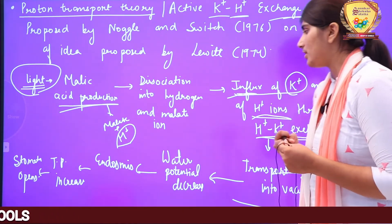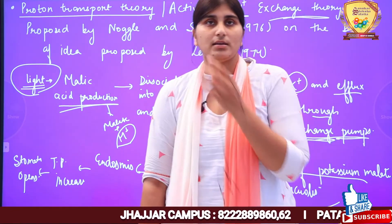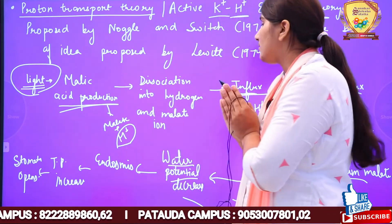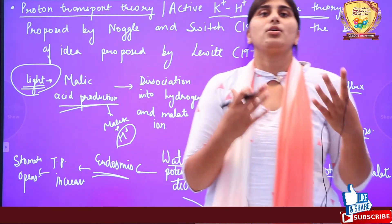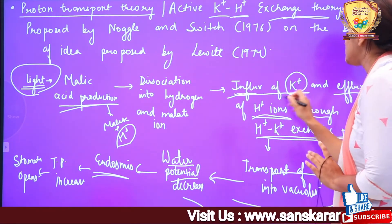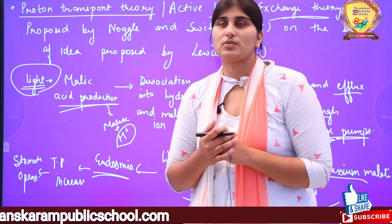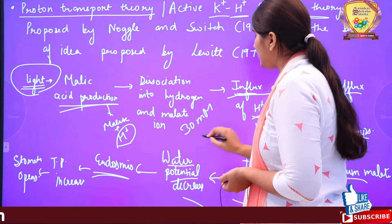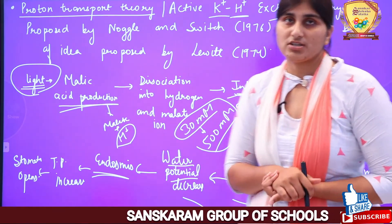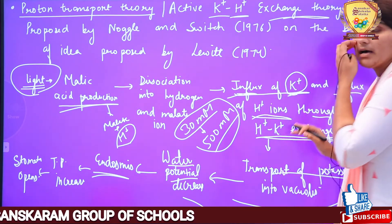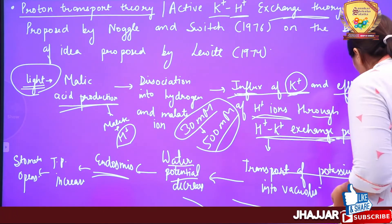Vacuole के अंदर potassium malate जाने से क्या होगा? Cell की osmotic potential — water potential — decrease हो जाएगी। Water potential कम होने से cell के अंदर water का movement होगा — endosmosis होगा। Endosmosis होते ही turgor pressure बढ़ेगा और stomata खुल जाएगी। Mainly K+ और H+ की concentration change होने की वजह से guard cell open and close होती है। K+ की concentration 30 millimoles से बढ़कर 500 millimoles तक हो जाती है during stomata opening। यह observed किया गया है — this is the most accepted theory।